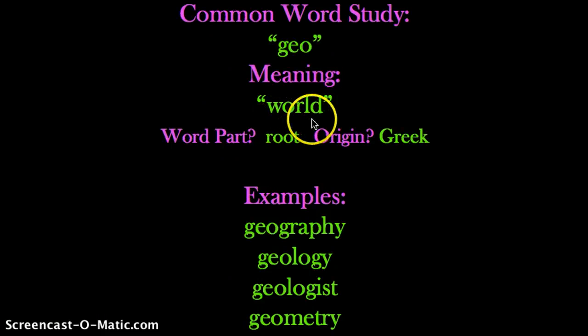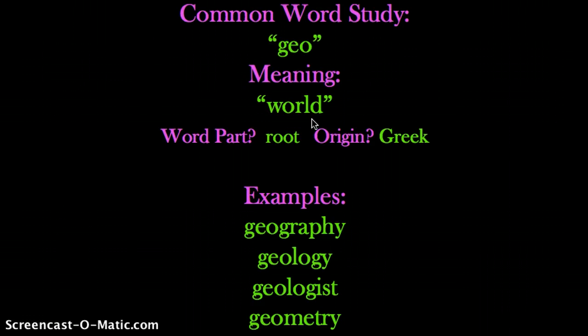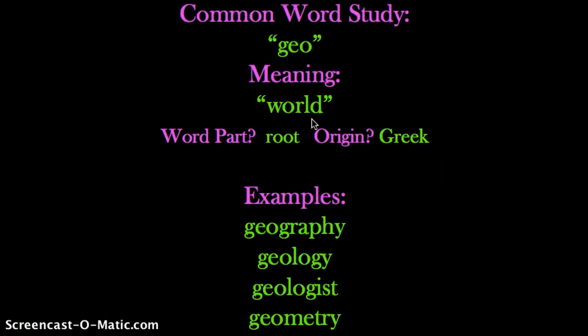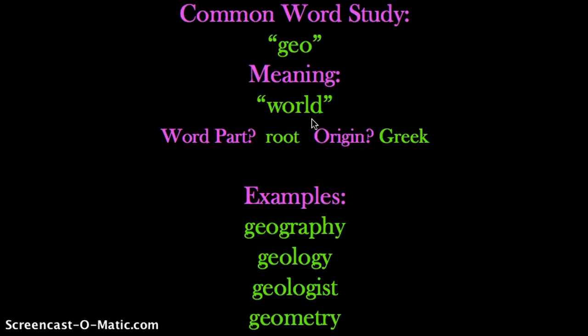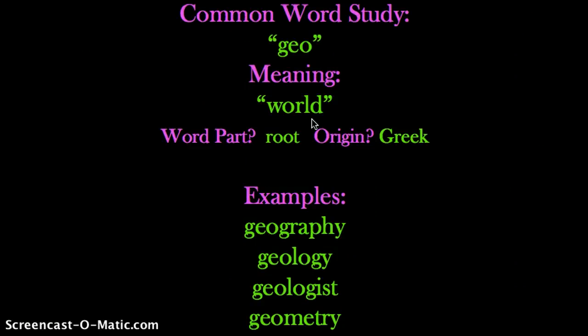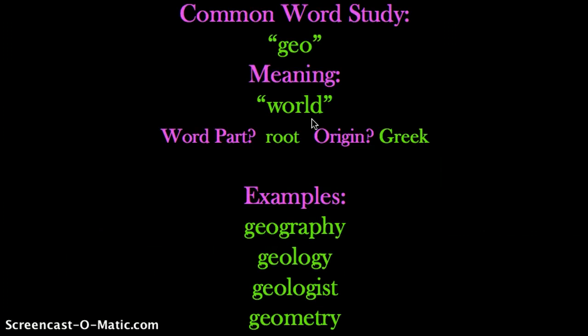The meaning of geo is world. The word part geo is a root word. A root word is a word that is basically a word in Greek, and other prefixes or suffixes attach themselves to a root word and change the meaning of that root word. But the root word itself, geo, simply means world. It comes from the Greek language.